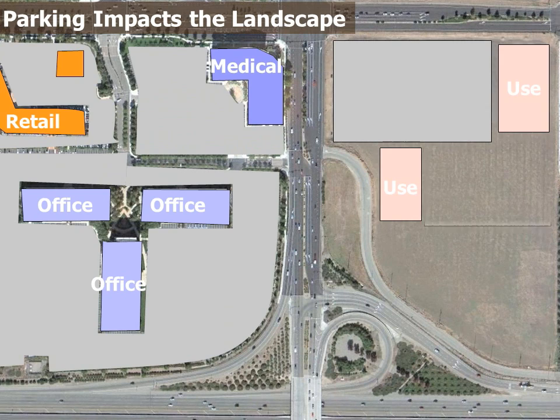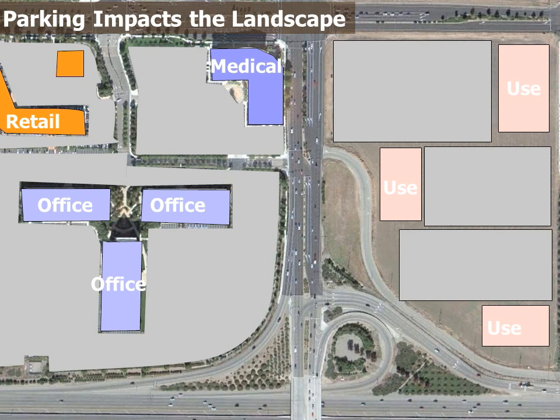As this pattern continues, you can see how our agricultural landscapes in the Bay Area are quickly turned over to fields of asphalt.